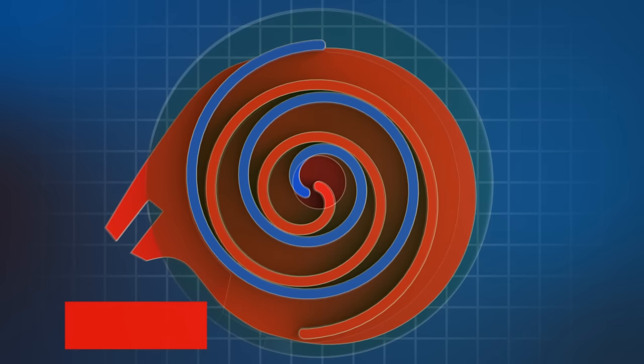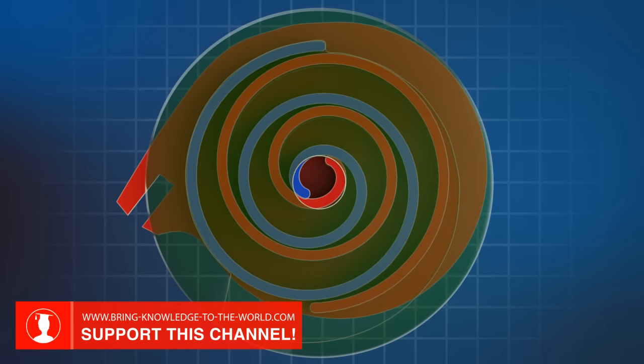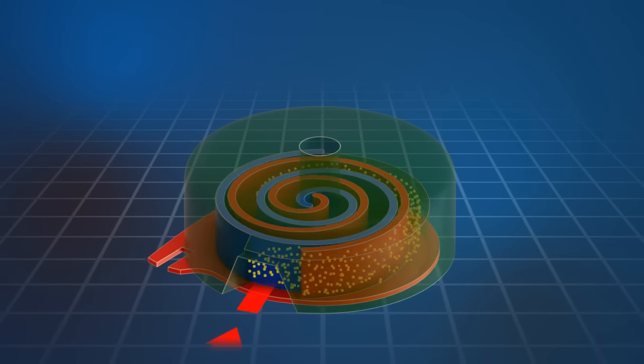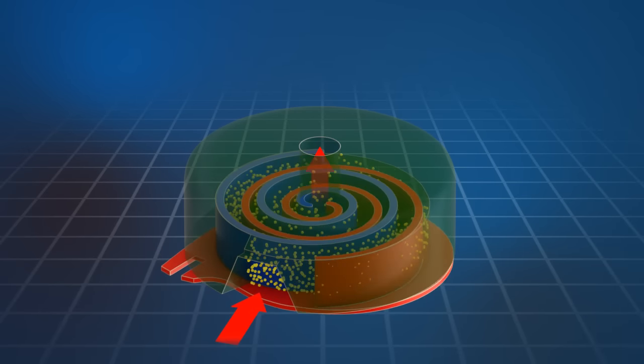In the middle of the scroll housing, which is shown here in green, is a discharge port through which the compressed gas can escape. Normally, there is also a check valve.